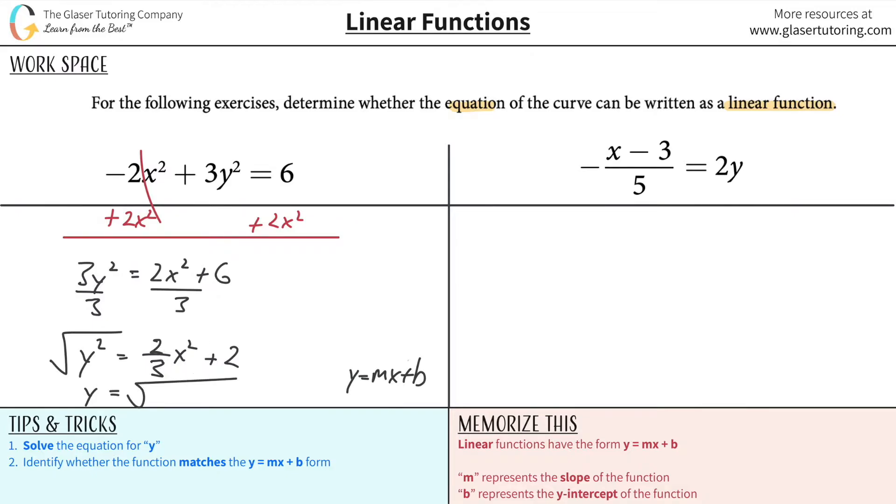And even if I were to plug this in, square root of 2 over 3 x squared plus 2, there's no square root in this, okay? So there's literally no way that this can be done.